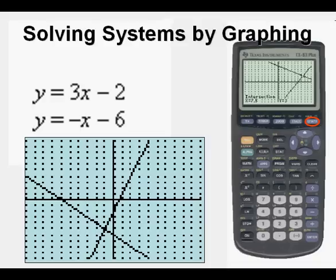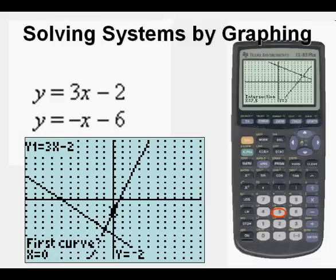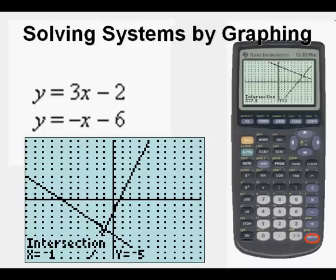Now we are going to find the exact solution by pressing second, then the trace key, which gives you the calc menu, then 5, which is intersect, and then enter, enter, enter. So enter three times and we will see our intersection is x equals negative 1, y equals negative 5. And here they are highlighted.